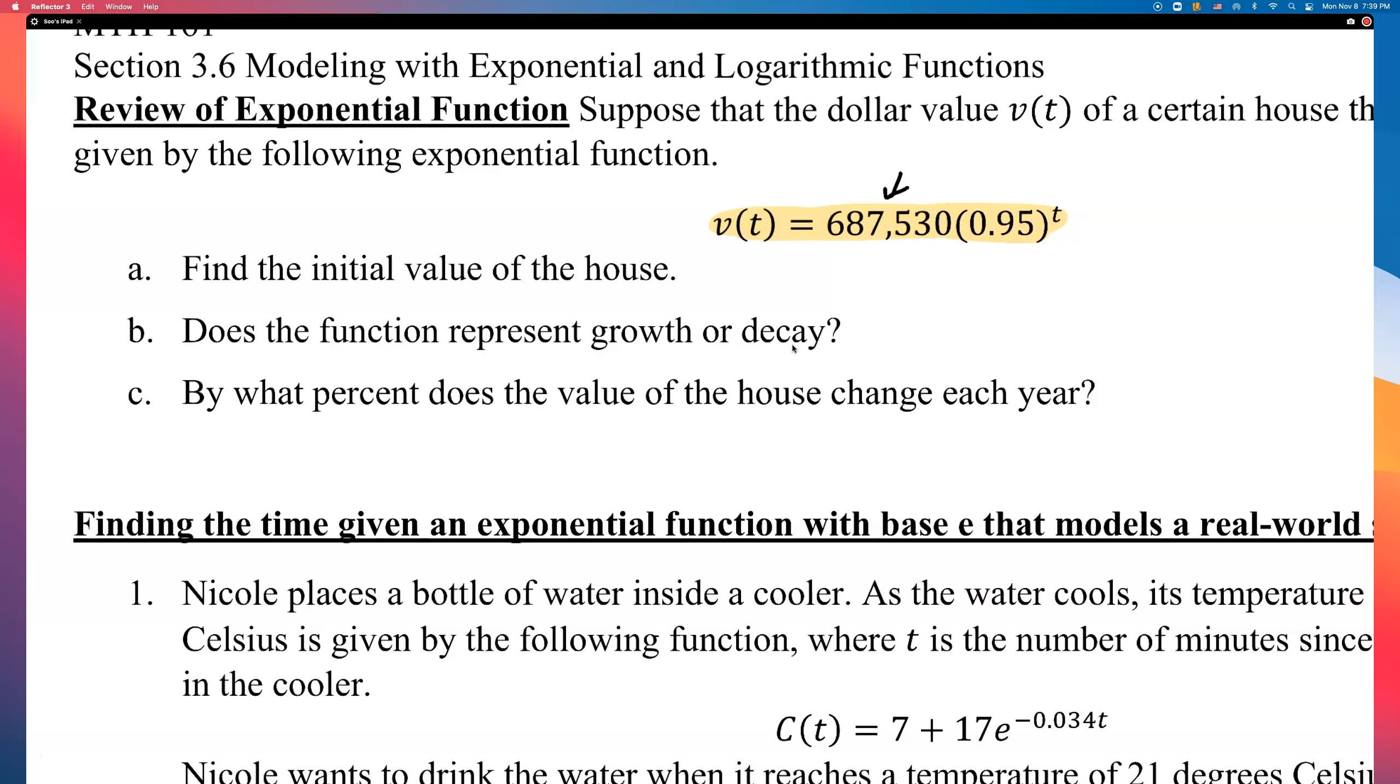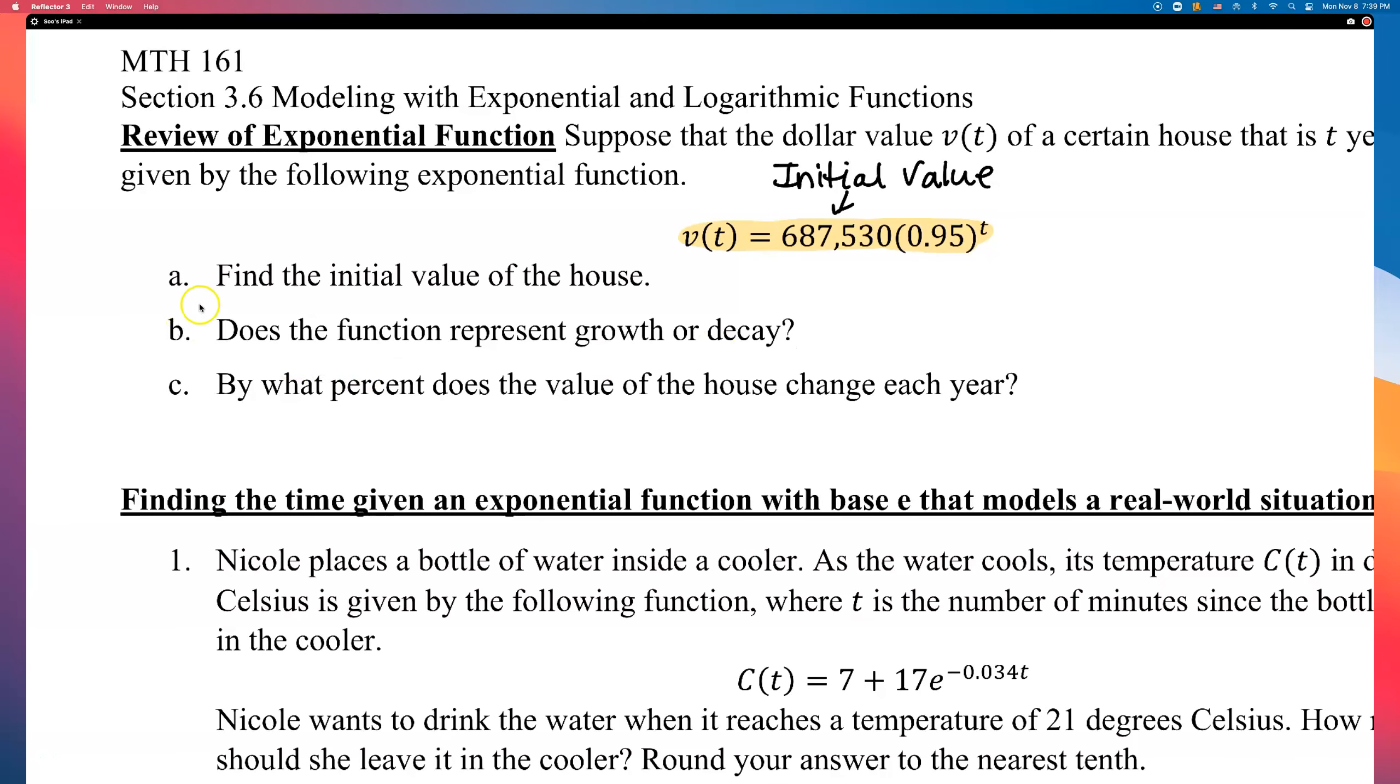Remember, this number is the initial value of this house. So, if part a is asking for find the initial value of the house, this house was initially $687,530.